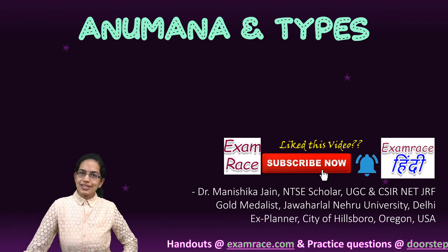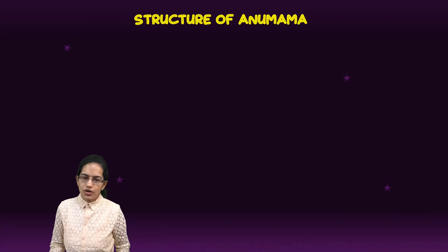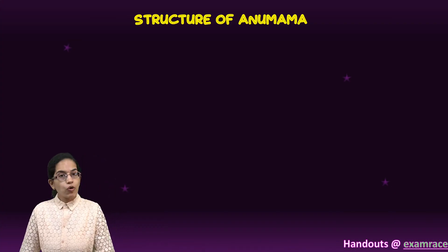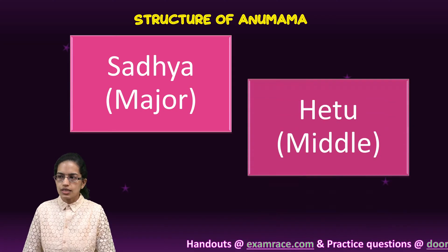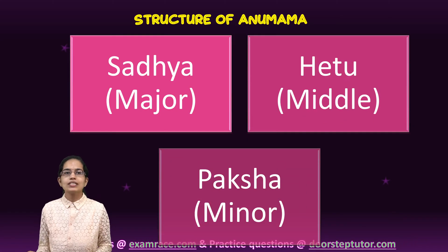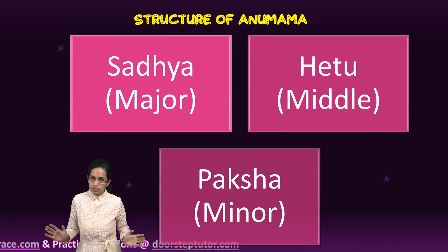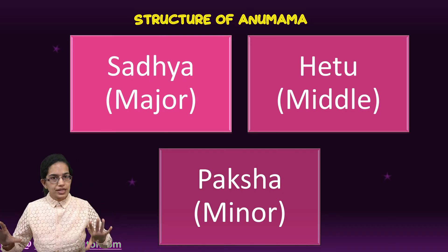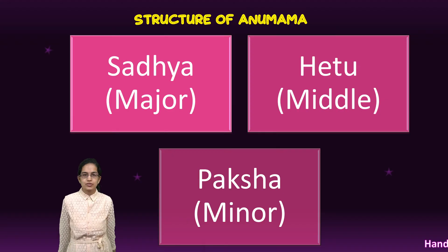Understanding anuman and types of anuman. In the previous lectures we have already talked about what is anuman. We focus on the three components of anuman which are the sadhya, the hetu and the paksh. Paksh is the minor term, hetu is the middle term and sadhya is the major term. These major, minor and middle terms are similar to the western syllogism that we have discussed.